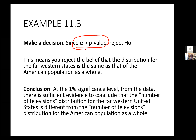The conclusion is: at a 1% significance level, from the data we observed, there's sufficient evidence to conclude that the number of televisions distribution for the far western United States is different than for the American population as a whole. They are significantly different — the observed data doesn't fit what we would have expected to see. That's the goodness of fit chi-squared test: does it fit what we would expect, or is it significantly different?